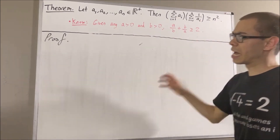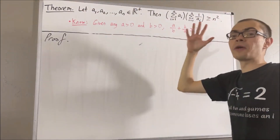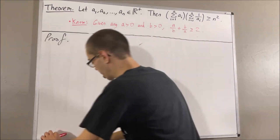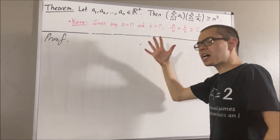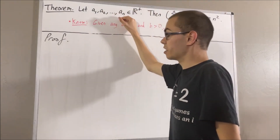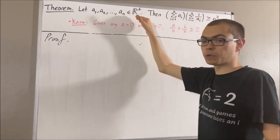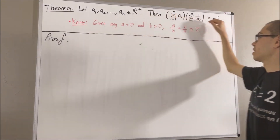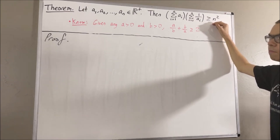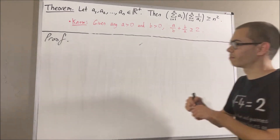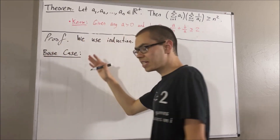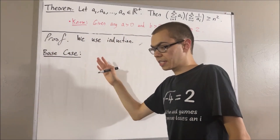Okay, now, to prove this theorem, we are going to use mathematical induction. And we're going to use mathematical induction to show for all positive integers n, we have that for all lists consisting of n positive real numbers, we have that this inequality holds. So, let's start with the base case. In the base case, we're dealing with the case n equals 1.